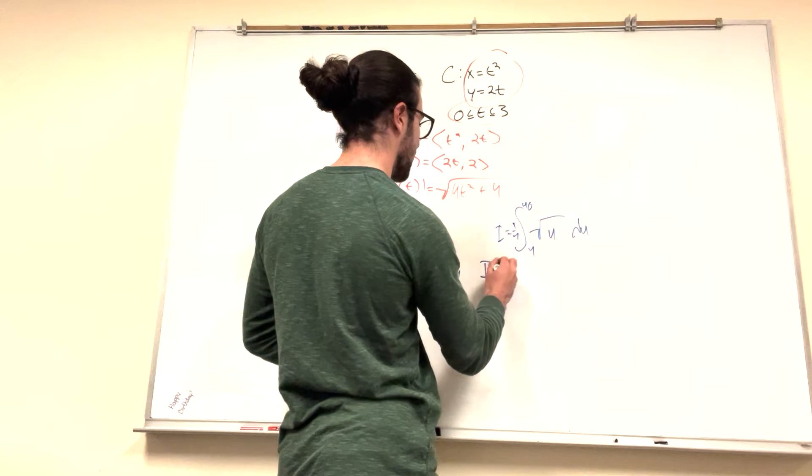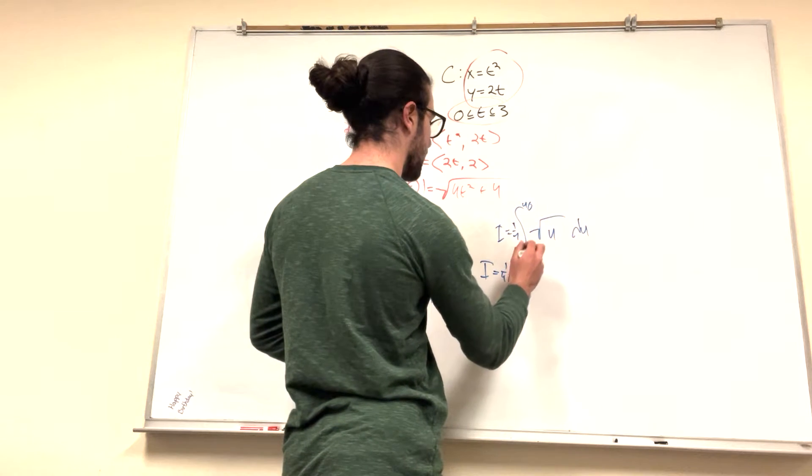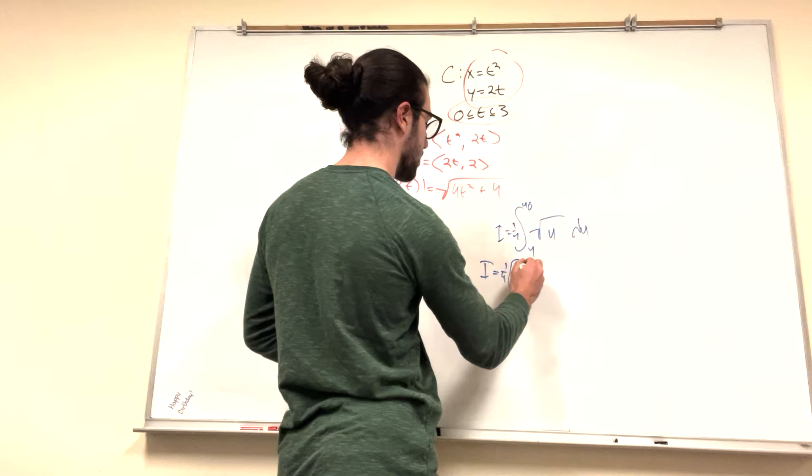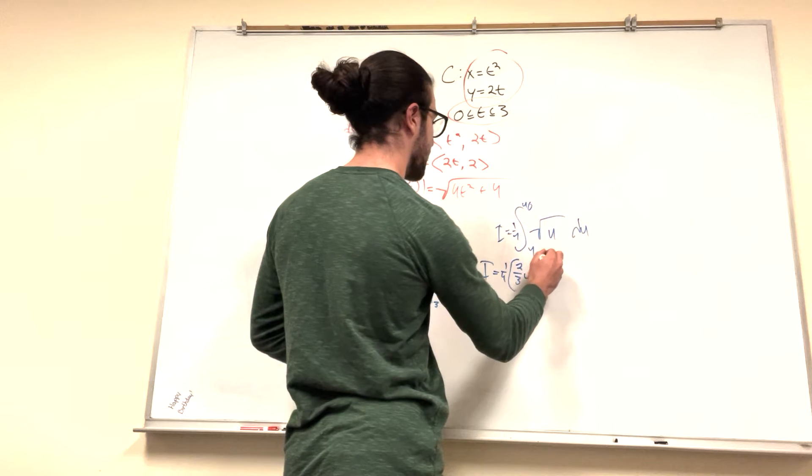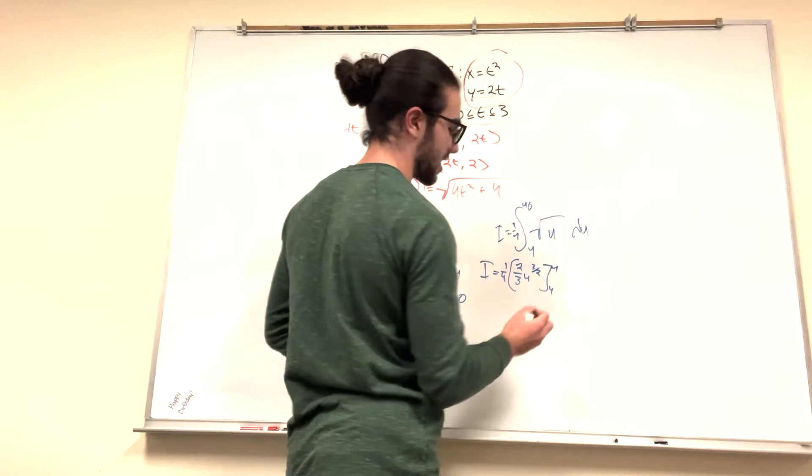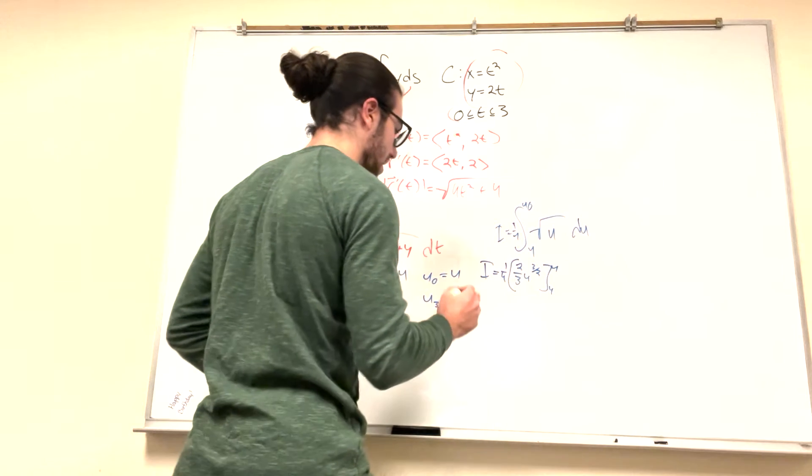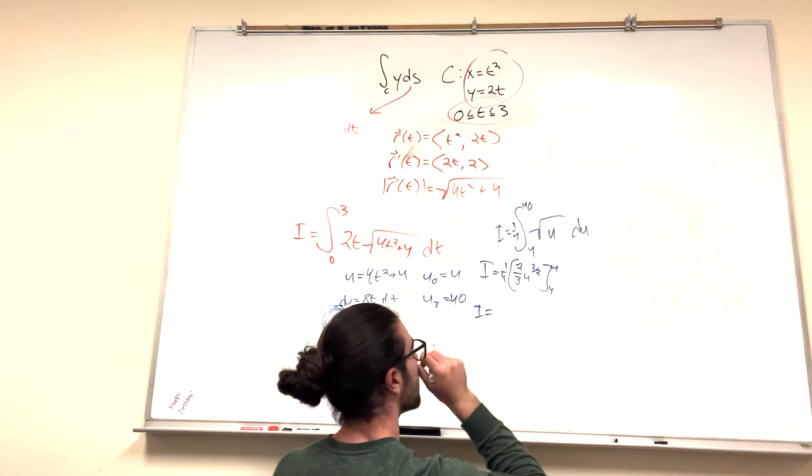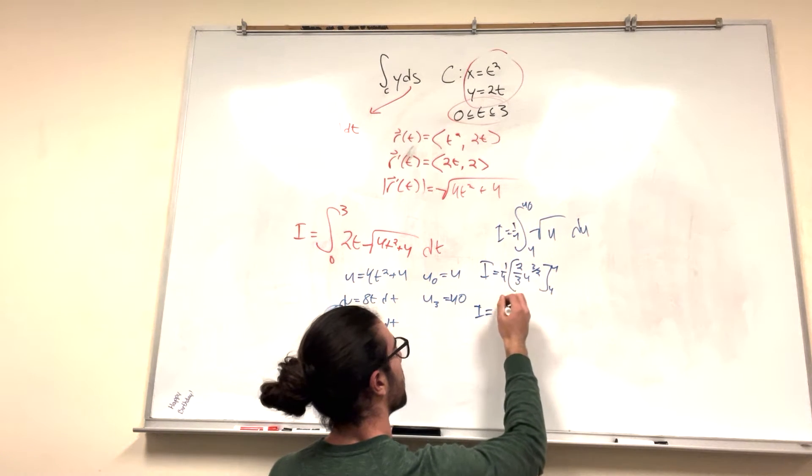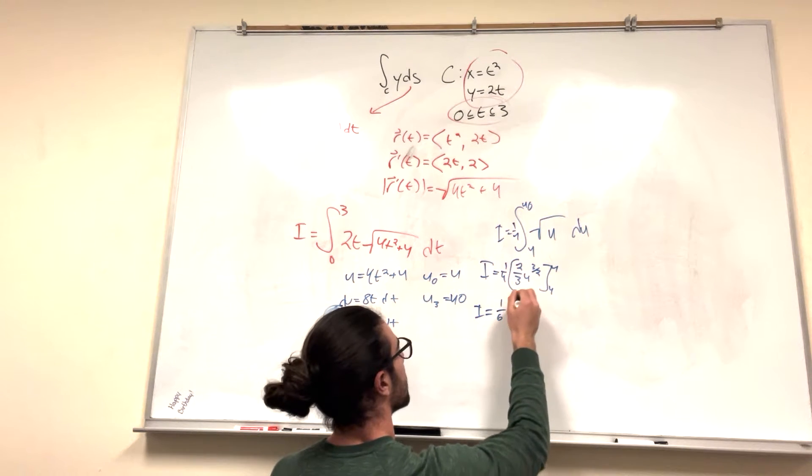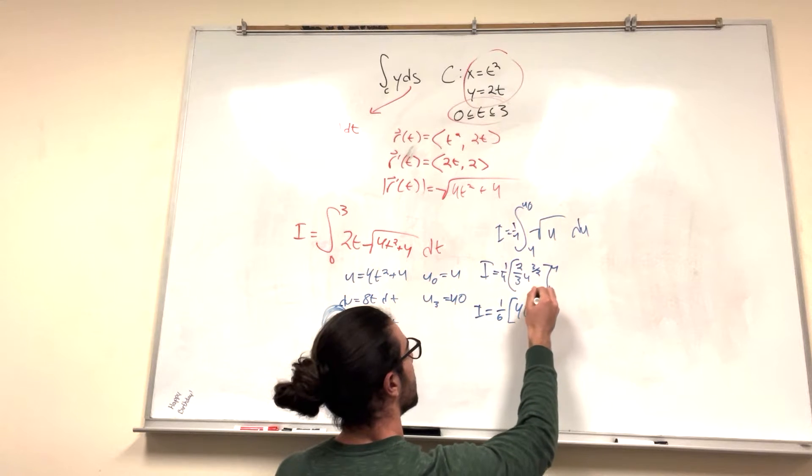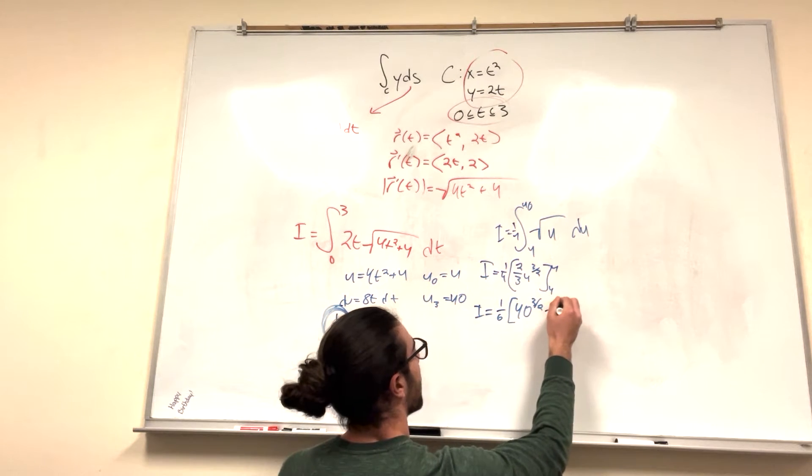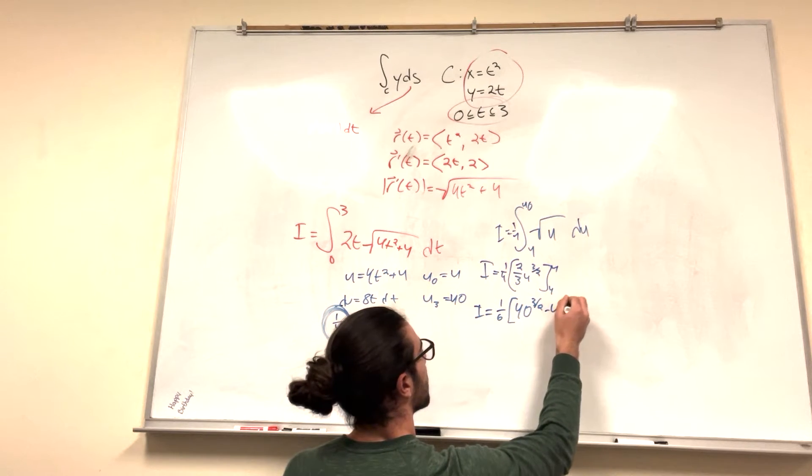Alright, so we can solve this integral. 1 fourth. u becomes 2 thirds u to the 3 halves from 4 to 40. This is going to get pretty ugly, but we can simplify it a little bit because the book simplifies it. So you can bring out the 2 thirds. That's going to become 2 over 12, which is 1 over 6.